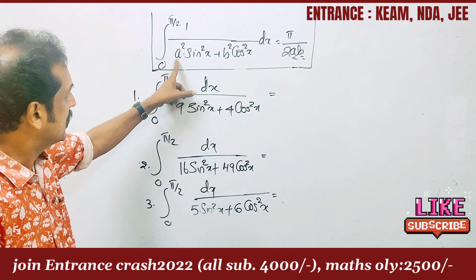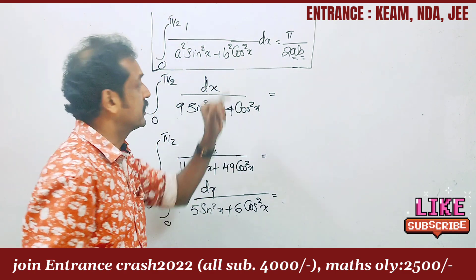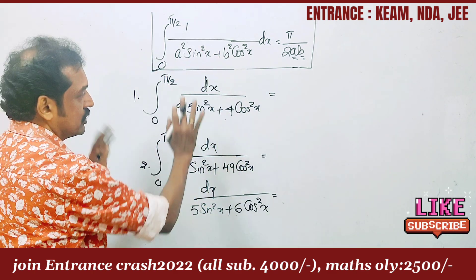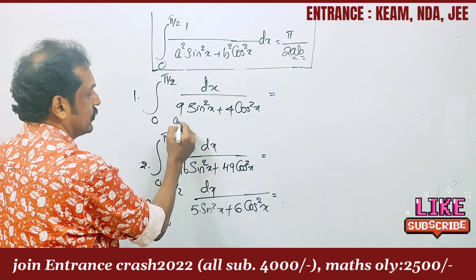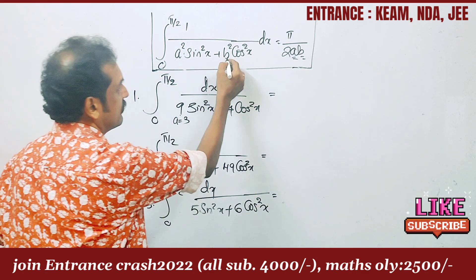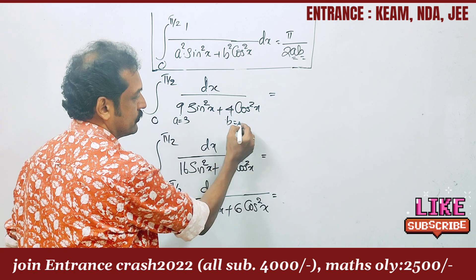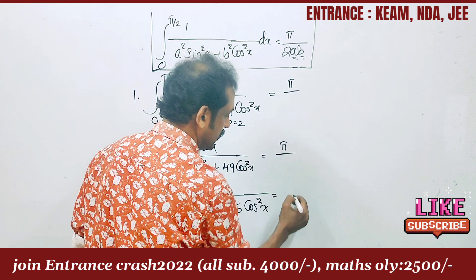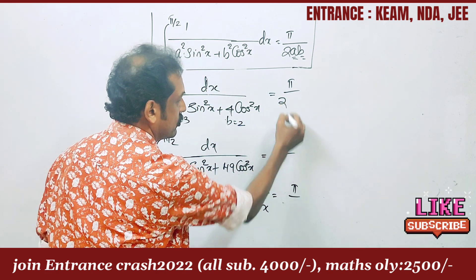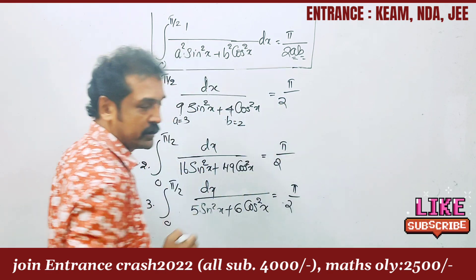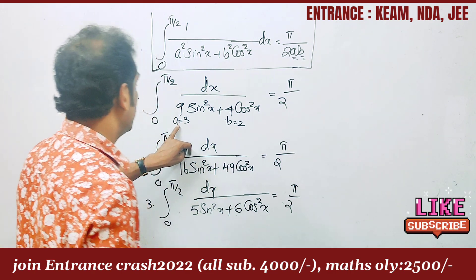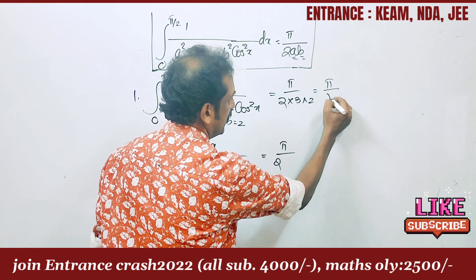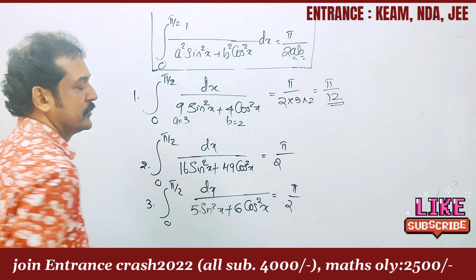The limit is always 0 to π/2, with a²sin²x + b²cos²x in the denominator. For this question: if 9 = a², then a = 3; if 4 = b², then b = 2. So the answer is π/(2 × 3 × 2) = π/12.